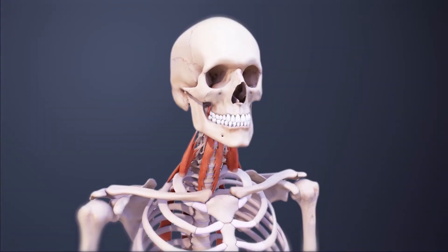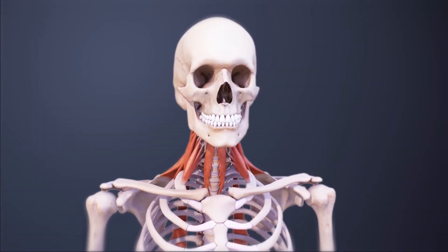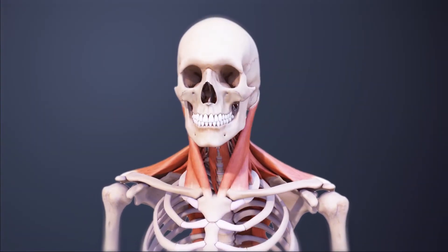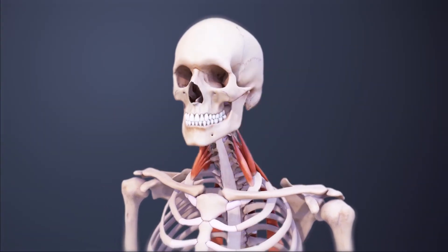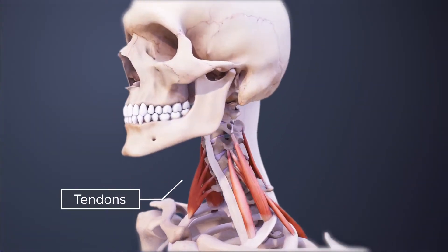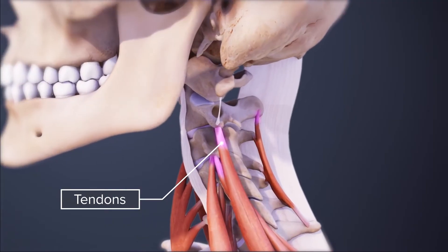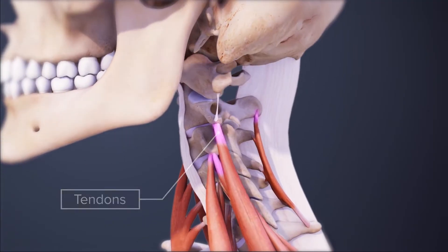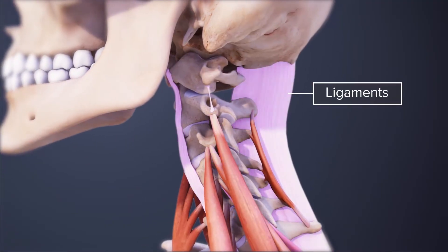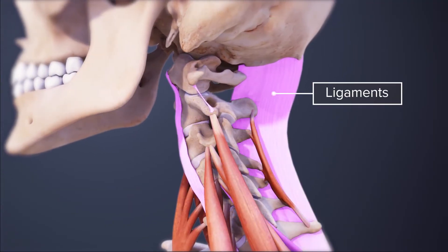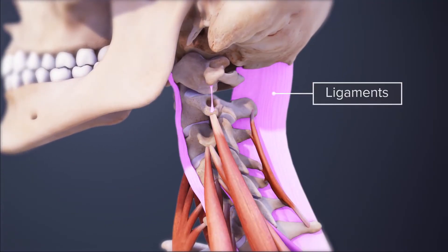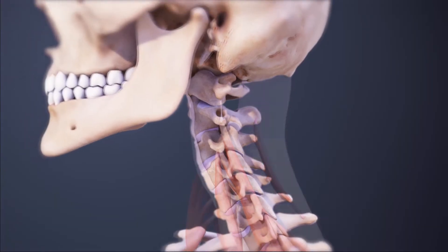Neck muscles work together with tendons and ligaments to support and move the neck and head. Tendons are connective tissue that attach muscle to bone, whereas ligaments attach bones to other bones.